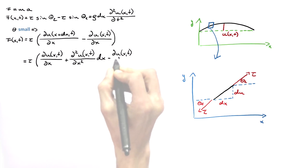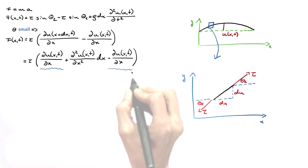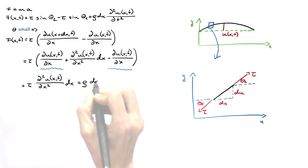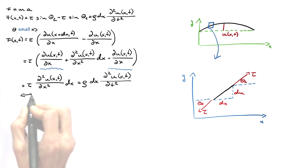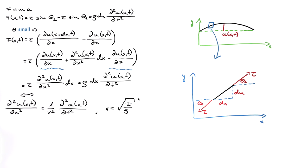These are the first two terms of a Taylor series. You can see that these two terms cancel each other out and the result is tau d2u over dx squared times dx equals rho dx d2u over dt squared. This can be rearranged to give the second-order spatial derivative of u equals 1 divided by v squared times the second-order time derivative of u.